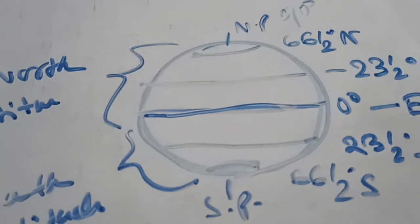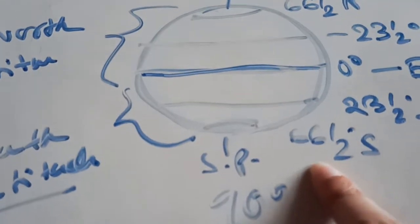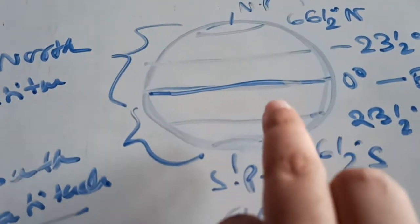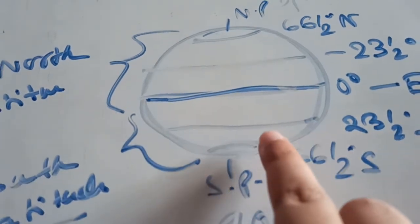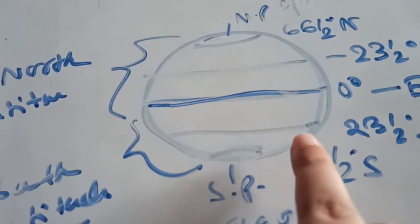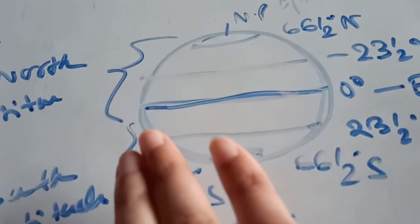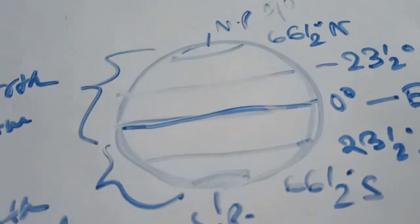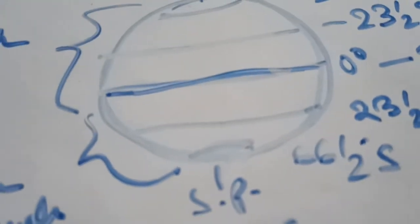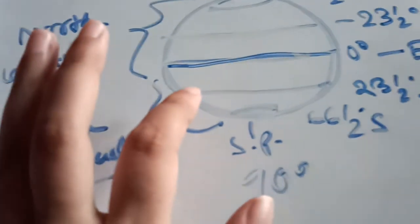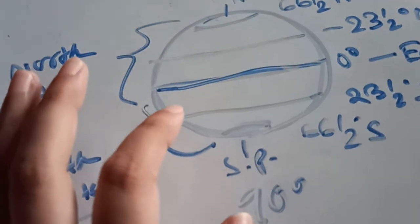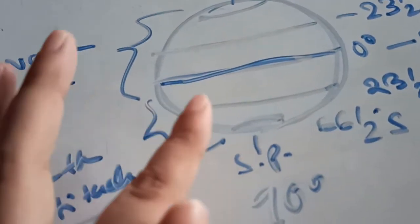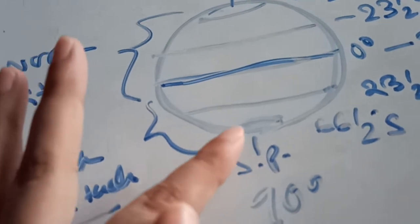The next important latitude is the Antarctic Circle, at 66.5° south of the equator. It also encircles a smaller part of the earth. During the winter solstice, on 22nd December, the Antarctic Circle receives the tangential rays of the sun, and the places beyond the Antarctic Circle have 24 hours of daytime.